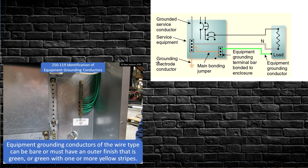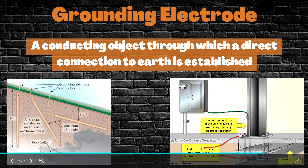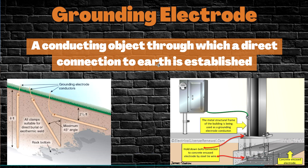Next is the grounding electrode. A grounding electrode is a conducting object through which a direct connection to earth is established. The grounding conductor is connected to the grounding electrode. One example shown is a concrete-encased electrode, where the metal frame is attached to bolts connected to rods running through the concrete — that's your grounding electrode. Another easy example is ground rods, which are also grounding electrodes. Simply put, it's a conducting object through which a direct connection to earth is established.